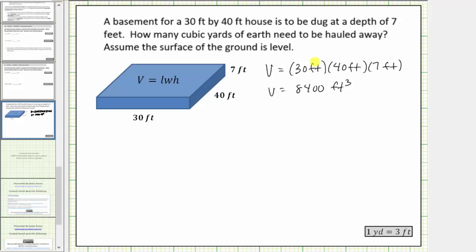And now to answer the question we convert 8,400 cubic feet to cubic yards. First we write this volume as a fraction with a denominator of one. Next we multiply it by a unit fraction that will convert cubic feet to cubic yards.